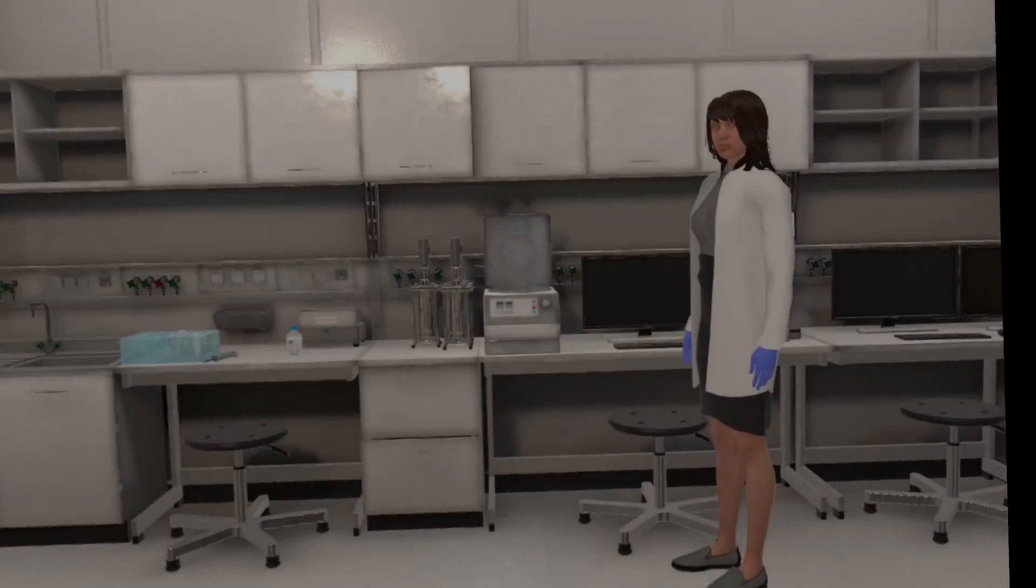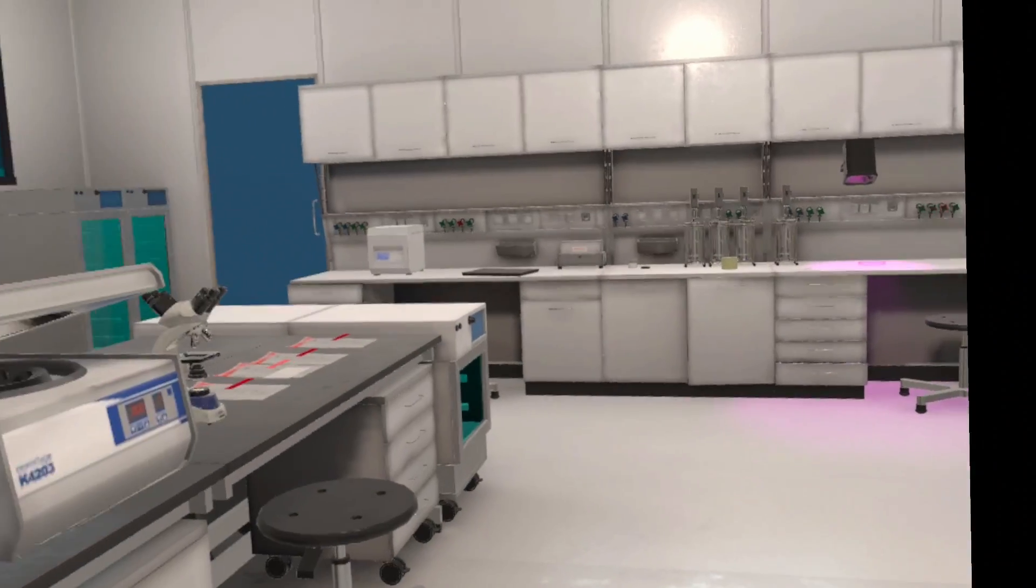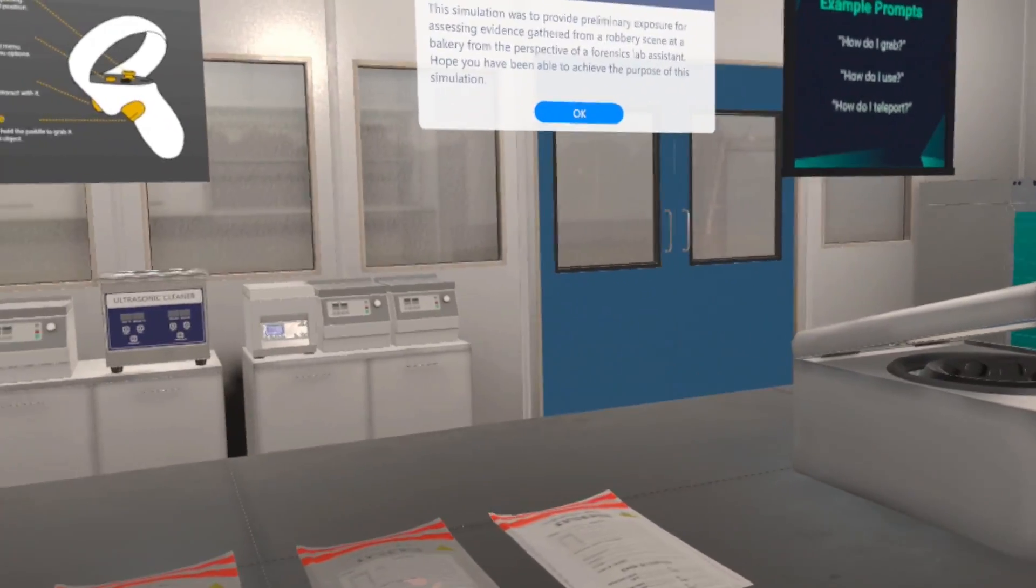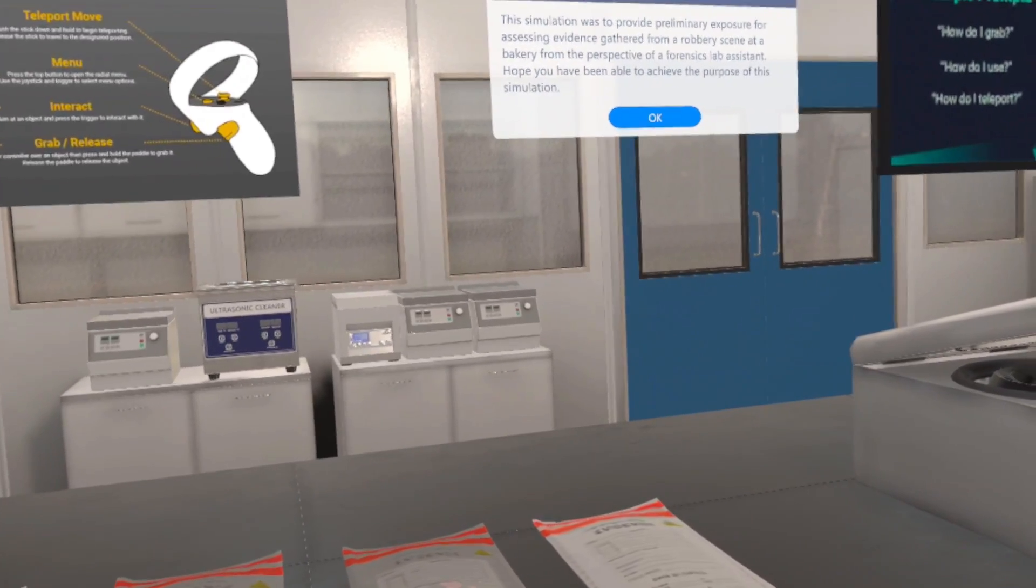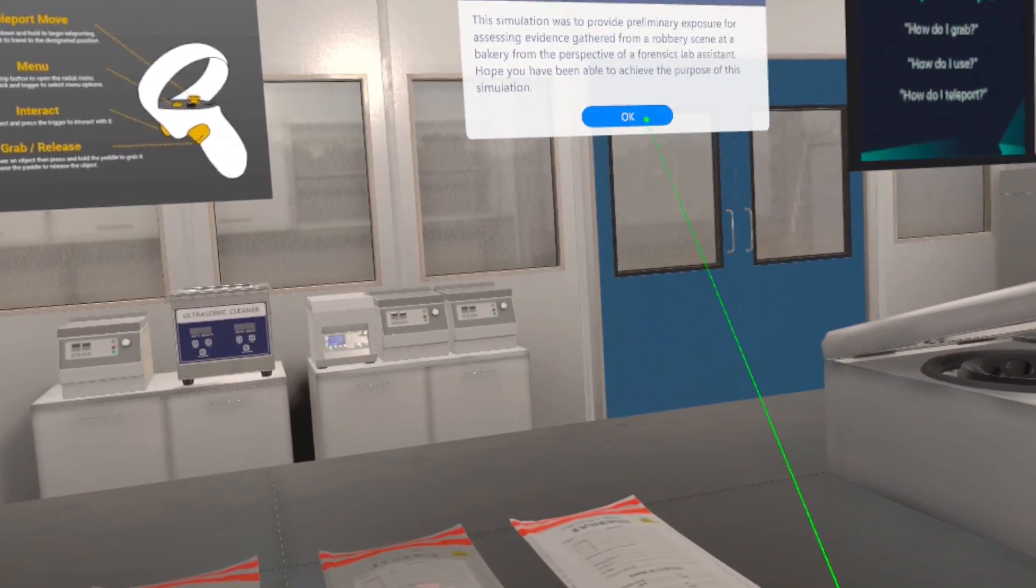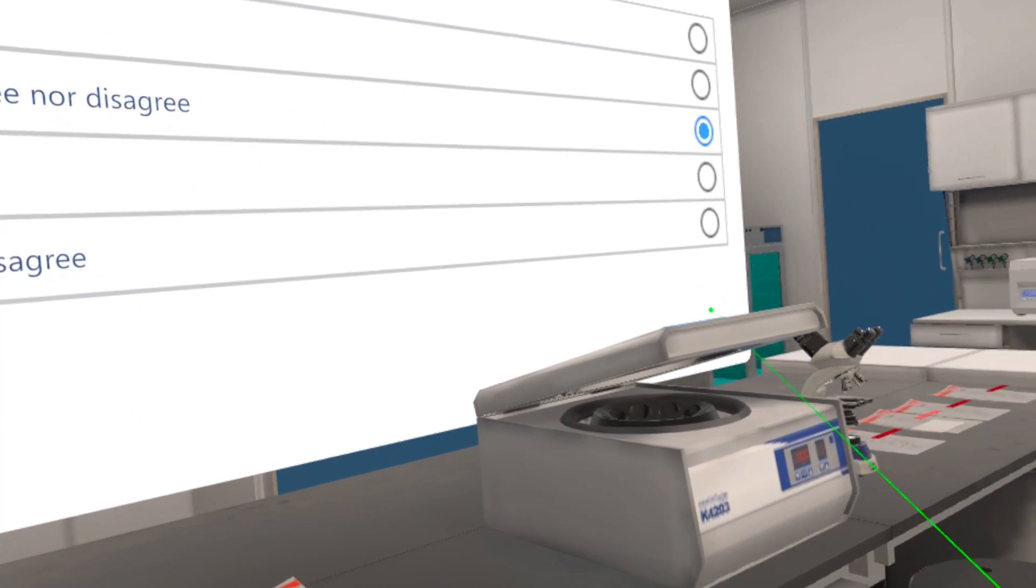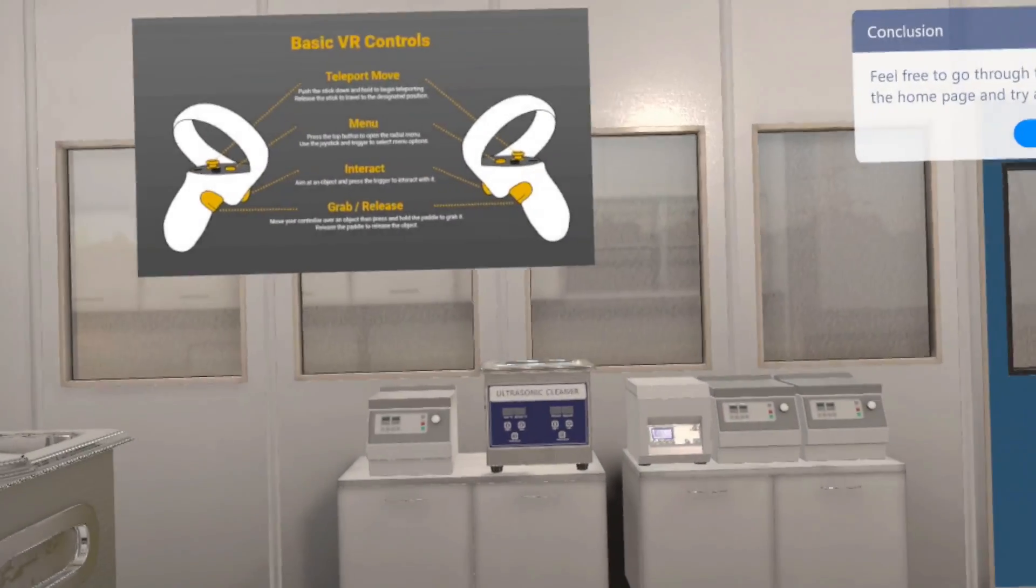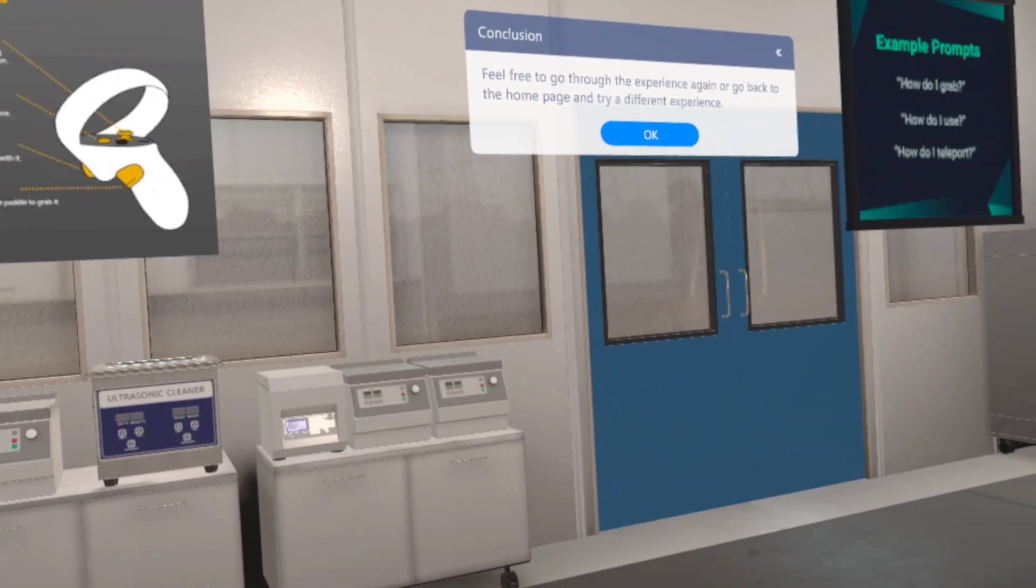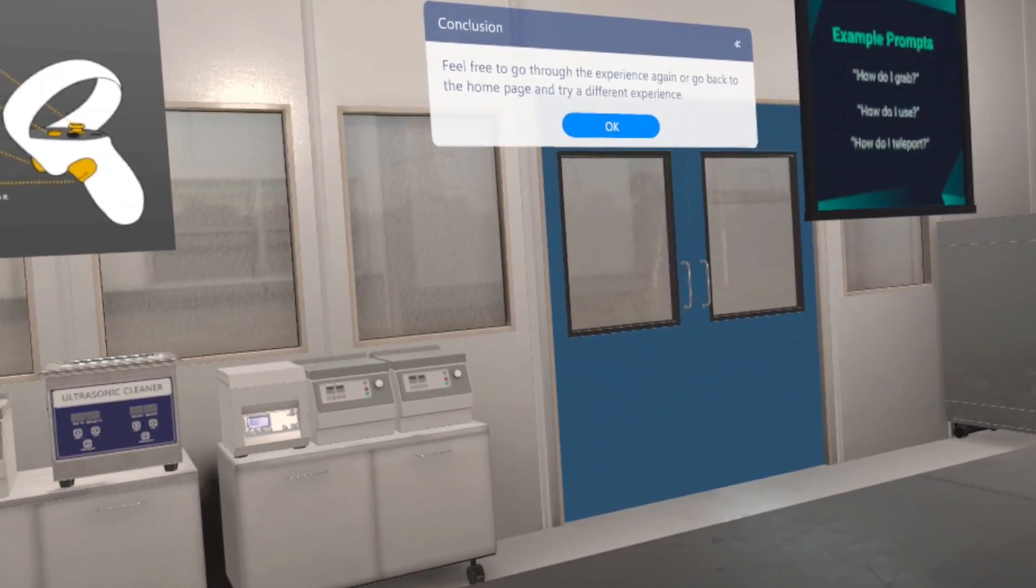This simulation was to provide preliminary exposure for assessing evidence gathered from a robbery scene at a bakery from the perspective of a forensics lab assistant. Hope you have been able to achieve the purpose of this simulation. Feel free to go through the experience again or go back to the home page and try a different experience.